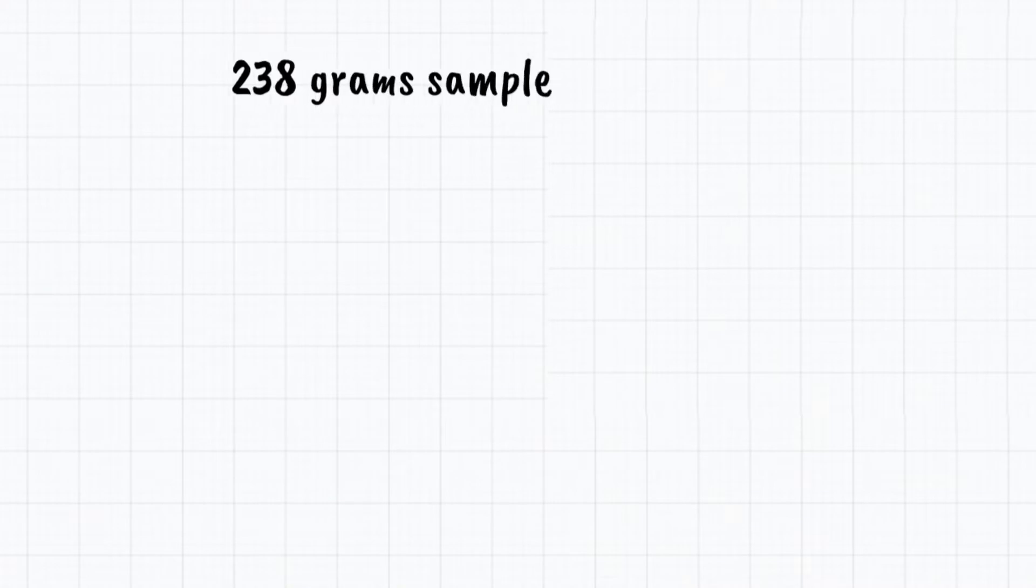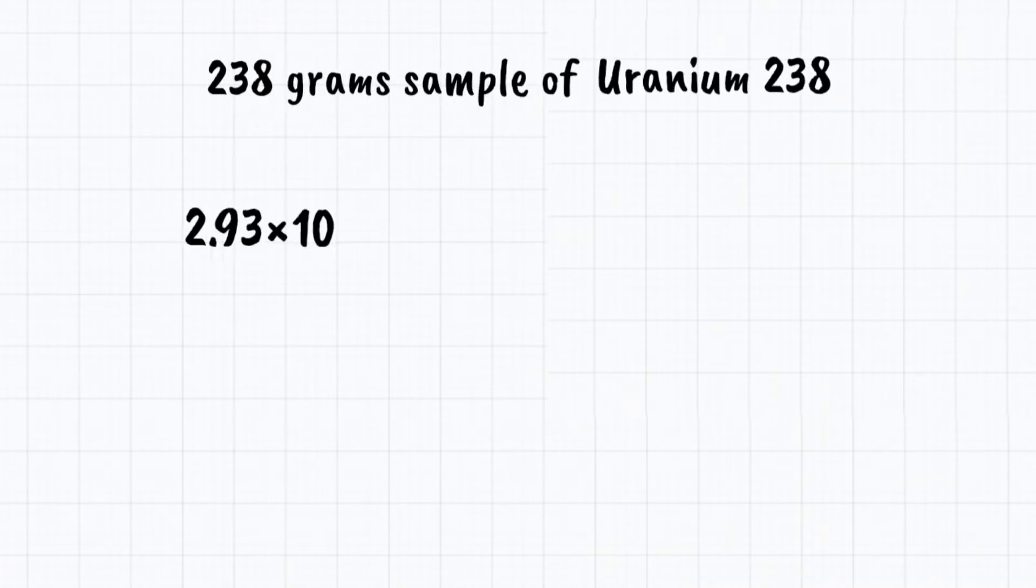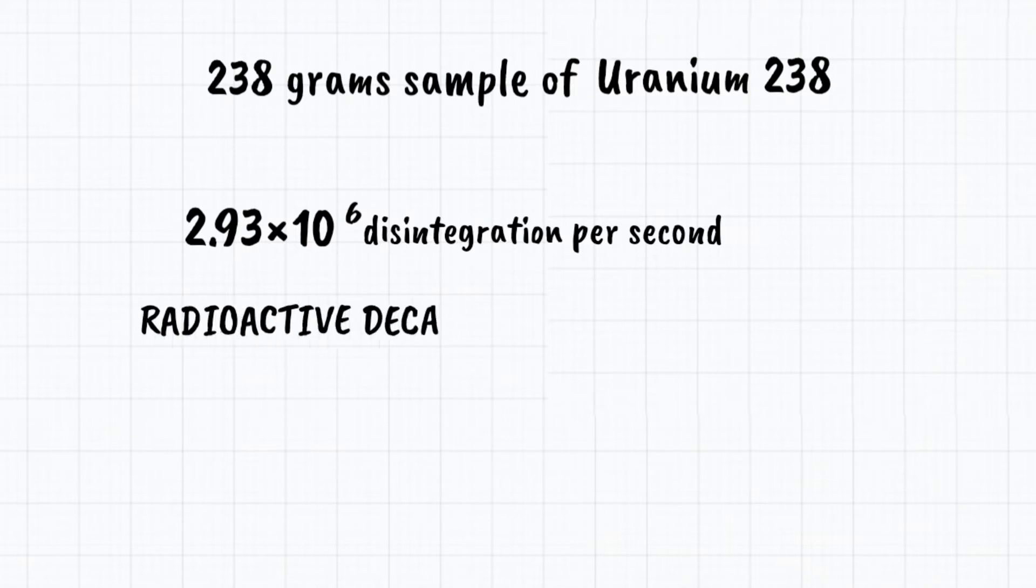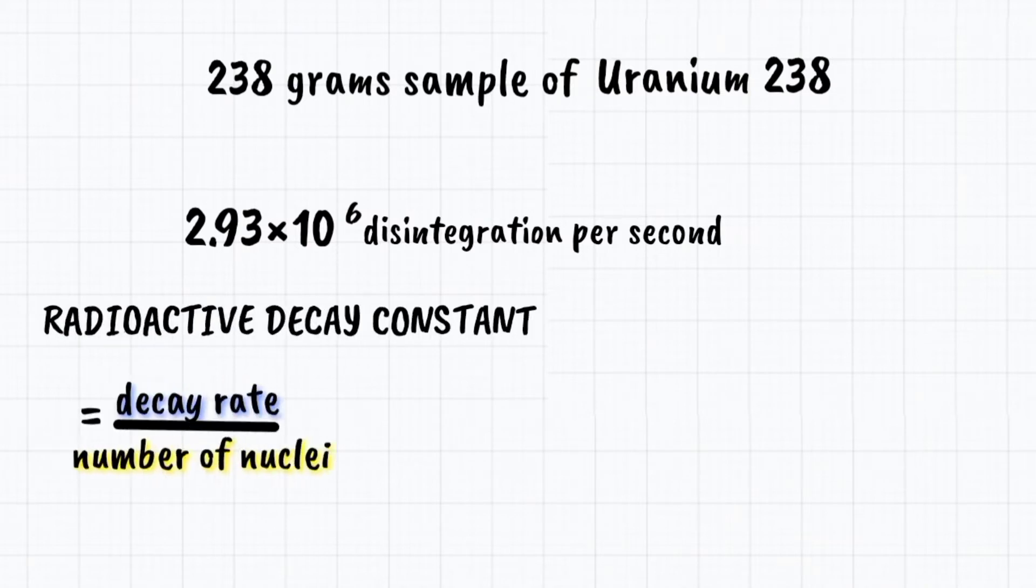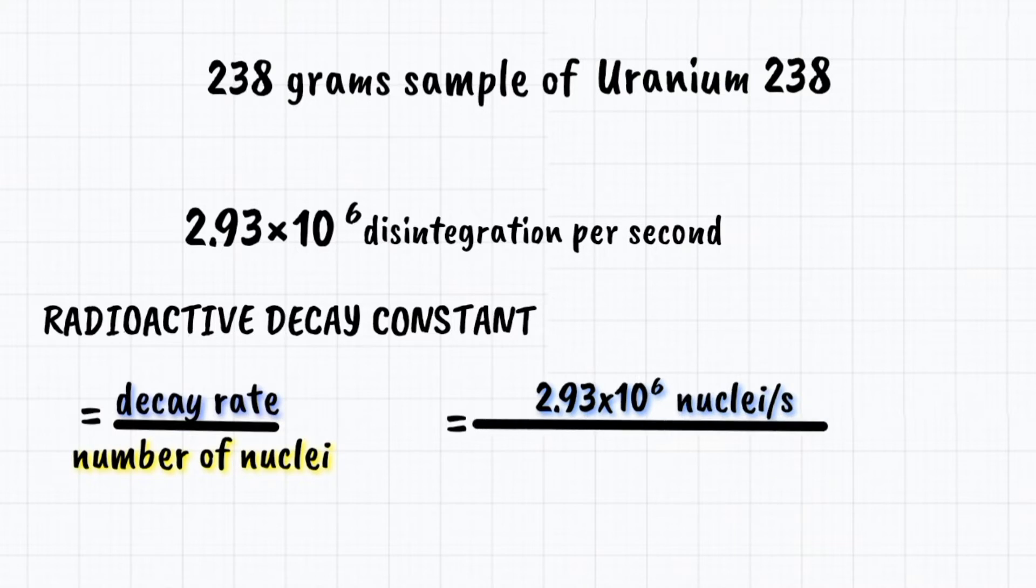For example, a 238-gram sample of uranium-238 that has 2.93 times 10 to the 6th power disintegrations per second would have a radioactive decay constant equal to decay rate per number of nuclei. Radioactive decay constant equals 2.93 times 10 to the 6th power nuclei per second divided by 6.02 times 10 to the 23rd power nuclei.